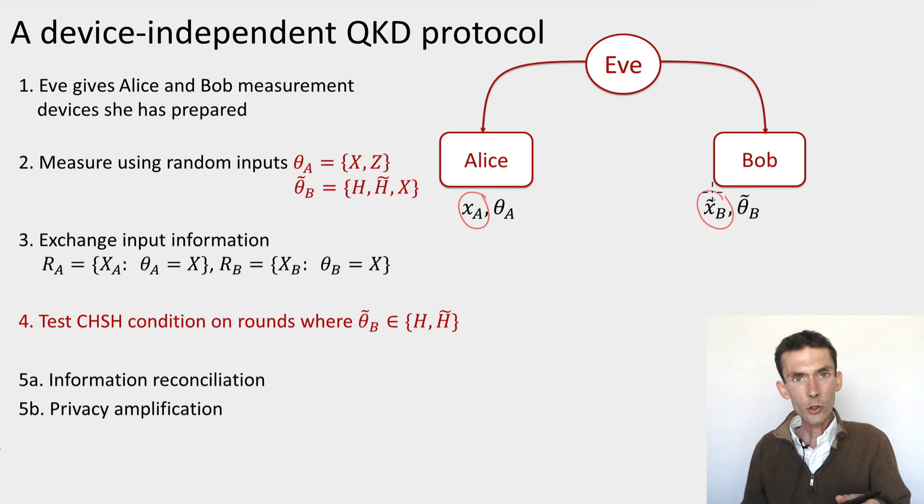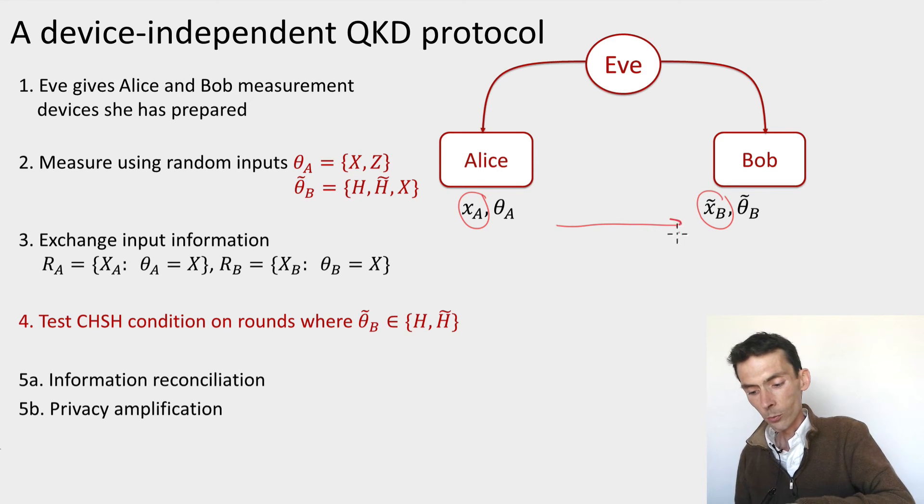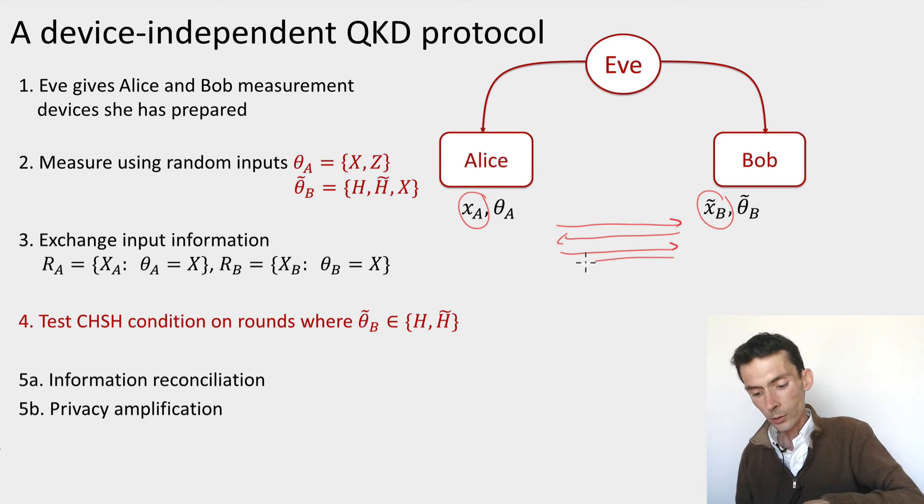Now they exchange their basis information. Alice says which inputs she used in which rounds. Bob says publicly which input he's used in which rounds. So there's public communication in order to do this. Based on this, they're going to do two things.